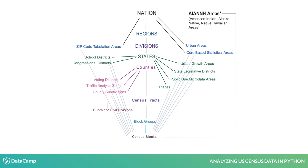But school districts, shown in green in the middle left of the chart, can cross county lines, so only blocks nest in school districts.